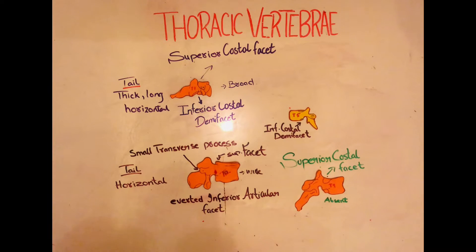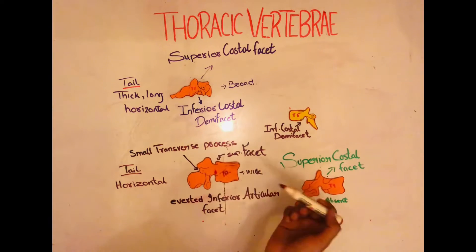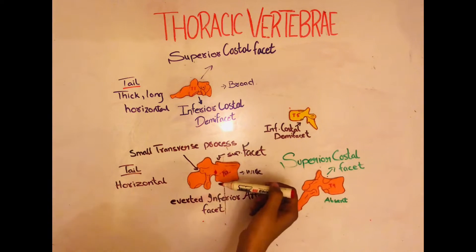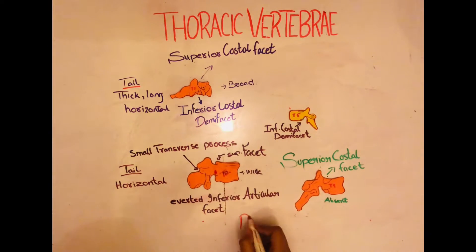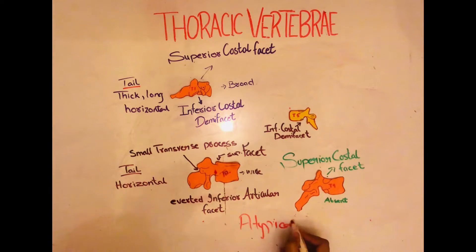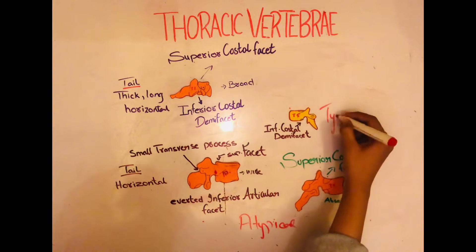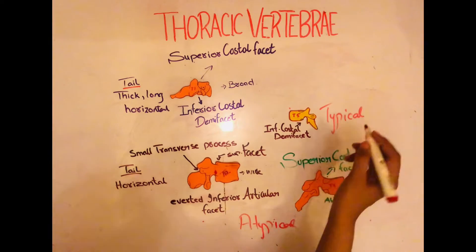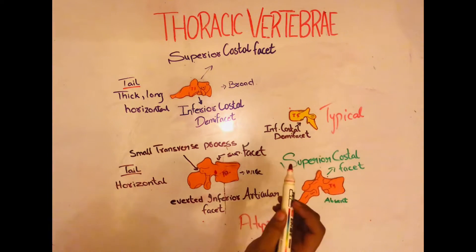Hello brainy physios. Today we are going to learn about thoracic vertebrae and the key differences between T1, T5, T9, and T12 vertebrae. T1, T9, and T12 vertebrae are atypical, whereas the T5 vertebrae is a typical vertebrae as it possesses all the necessary features that a thoracic vertebrae must have.